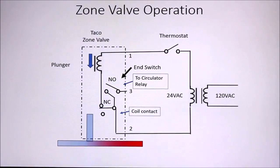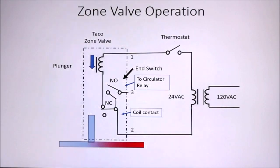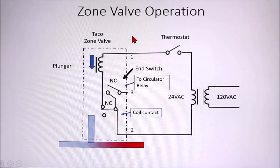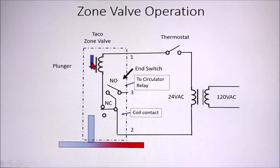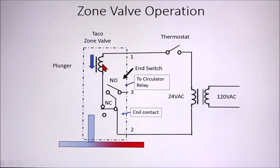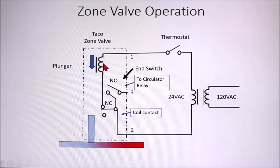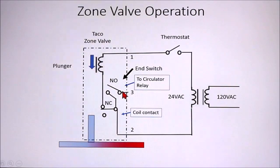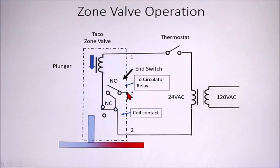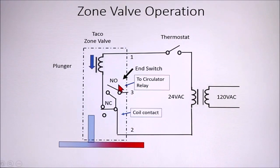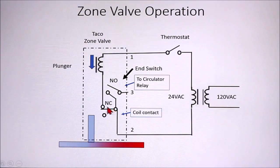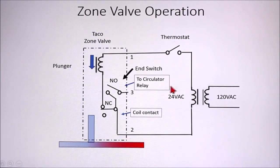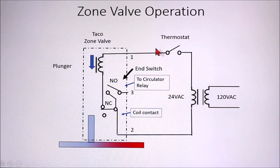Okay, this is a diagram of a zone valve and how it operates. In this diagram we have a thermostat right here that calls for heat. We have the Taco zone valve that I showed you earlier, which has a plunger and a coil. A coil heats up a mass of wax and grease that pushes the plunger when it gets hot. It has two contacts. This contact goes to the circulator relay. It's sometimes called an end switch. And then there's a coil contact which allows current to flow through the coil, and we'll see how this works in a minute. There's also a 24-volt AC transformer here, which powers the zone valve.